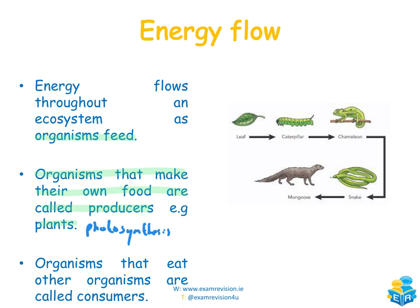We are an example of a consumer because we don't produce our own food — we have to get food from other organisms. Energy is passed from organism to organism. The arrow in a food chain points towards the organism doing the eating. So the caterpillar eats the leaf, the chameleon eats the caterpillar, the snake eats the chameleon, and the mongoose eats the snake.